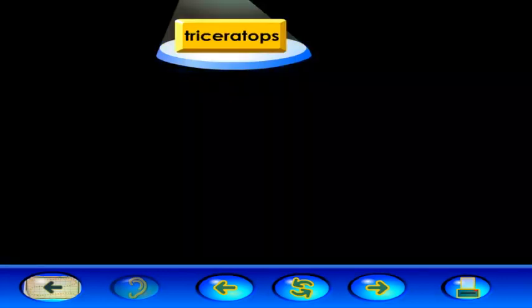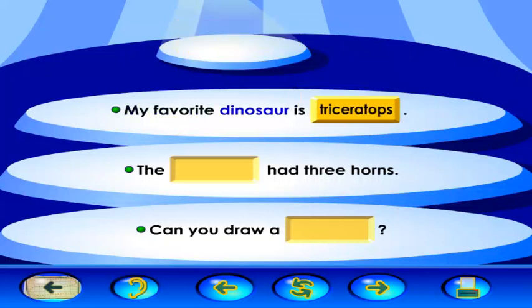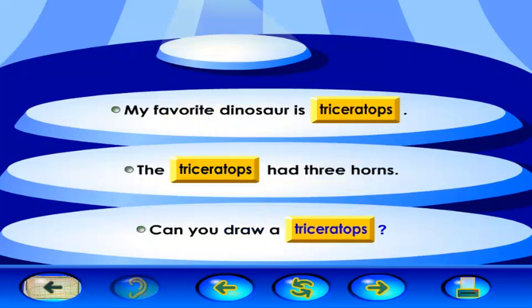Introducing the word Triceratops. Look at the word and say it out loud with me. Triceratops. Use the word Triceratops to complete these sentences. My favorite dinosaur is Triceratops. The Triceratops had three horns. Can you draw a Triceratops?